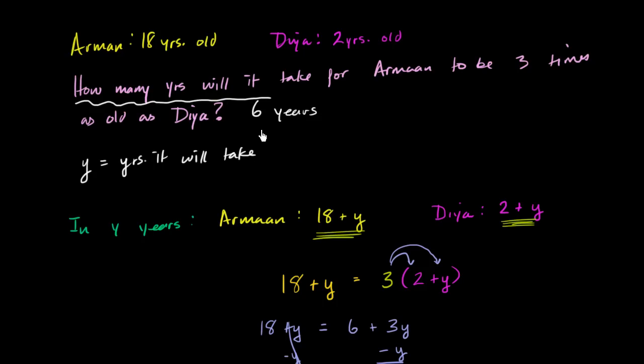Now, I want you to verify this. Think about it. Is this actually true? Well, in six years, how old is Armand going to be? He's going to be 18 plus six. We now know that this thing is six. So in six years, Armand is going to be 18 plus six, which is 24 years old.